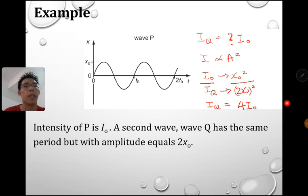So 4 times of the I0. Its amplitude is 2 times greater, but its intensity is now 4 times greater. A lot more energy that carries by that. Let's move on.